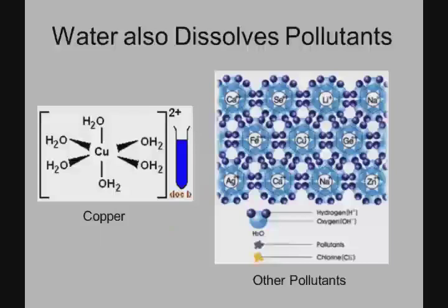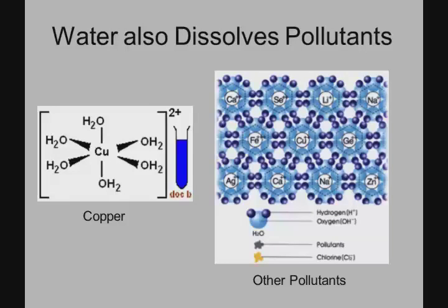On the other side, water can also dissolve pollutants. Copper ions are surrounded by water molecules — they form a complex with the water molecules, and that keeps the copper dissolved. A variety of metals can be dissolved by water, and this is a concern when looking at pollutants. We want to understand how potential toxins like cadmium and arsenic are dissolved in waters, and how they behave once they're in those waters.